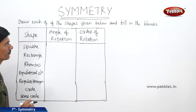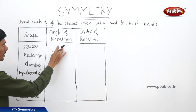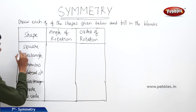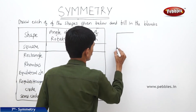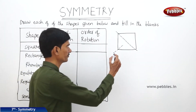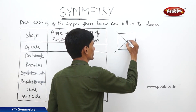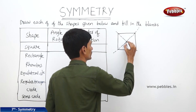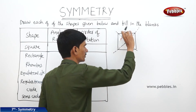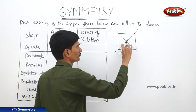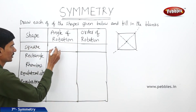Now let us see the next question: Draw each of the shapes given below and fill in the blanks. The first one is a square, and we should write its angle of rotation and order of rotation. In case of a square, the center is the point of intersection of the two diagonals. If you rotate the square through 90 degrees, we will get back its original position. So the angle of rotation is 90 degrees.